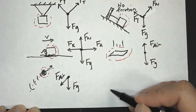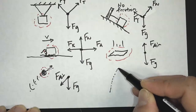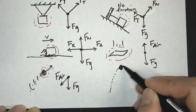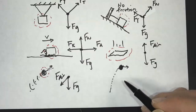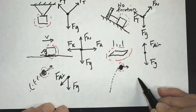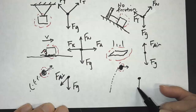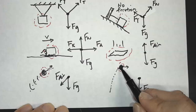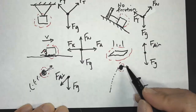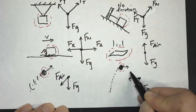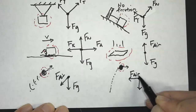Now let's look at where the ball is at the peak of its projectile motion. At the peak, it's moving towards the right. What are the forces acting on it? We know there's gravitational force. And the air drag — remember, it's going to be in the opposite direction that it's moving. So at the highest point, since it's moving to the right, the air drag is going to be to the left.